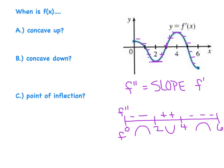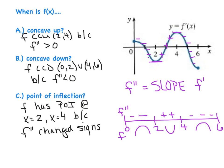Try the sentences on your own — be as specific yet concise as possible. f is concave up from 2 to 4 because f double prime is positive, or because f single prime is increasing. f is concave down between 0 and 2 and between 4 and 6 because f double prime is less than zero. We've got a point of inflection at x equals 2 and x equals 4 because f double prime changed signs, or f single prime changed from increasing to decreasing.